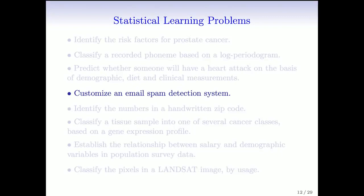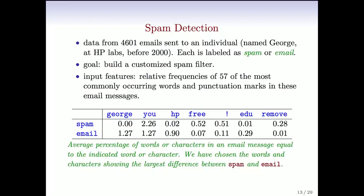Our next example is email spam detection. Everyone uses email and spam is definitely a problem, so spam filters are a very important application of statistical and machine learning. The data on this table is from the late 90s, from Hewlett Packard — a person named George who worked at HP Labs. This was early in the days of email when spam was also not very sophisticated. We have data from over 4,000 emails sent to an individual named George at HP Labs, each one hand-labeled as either spam or good email.